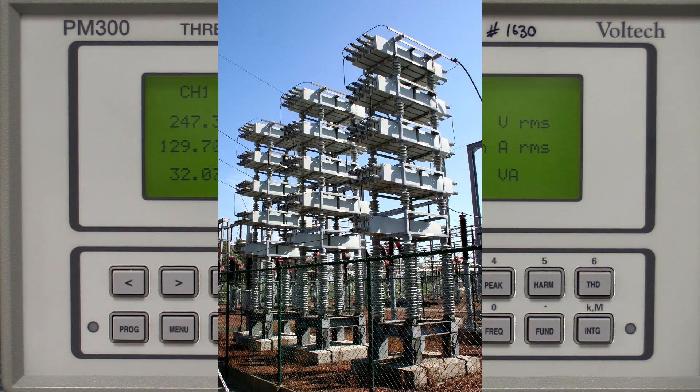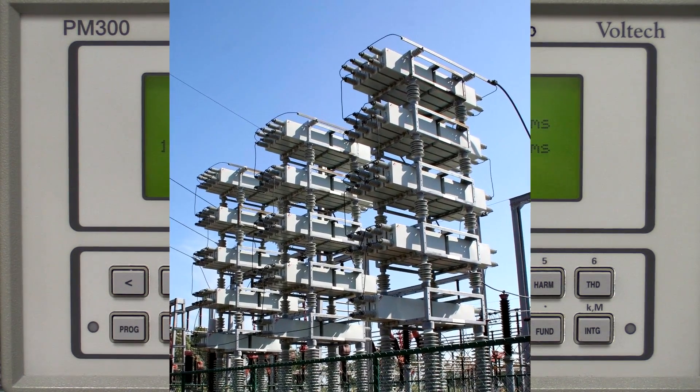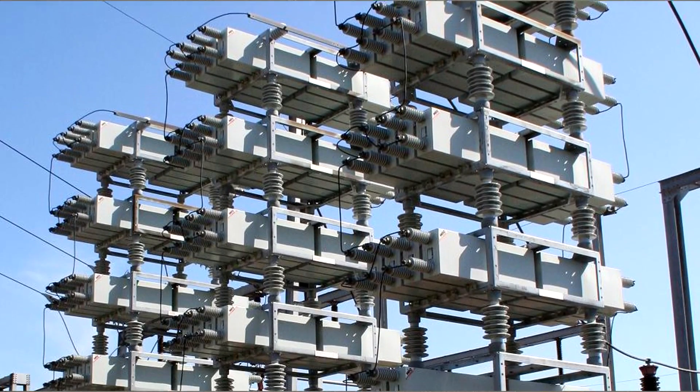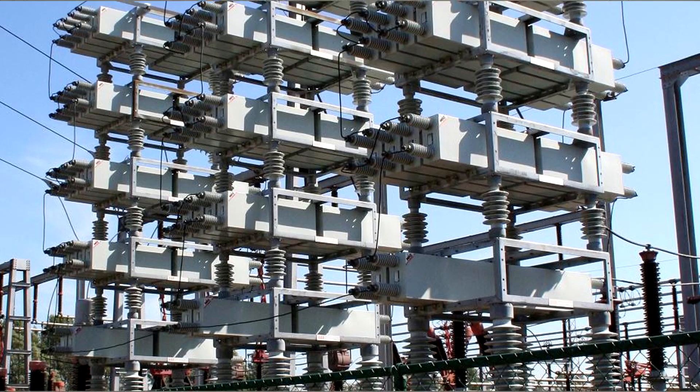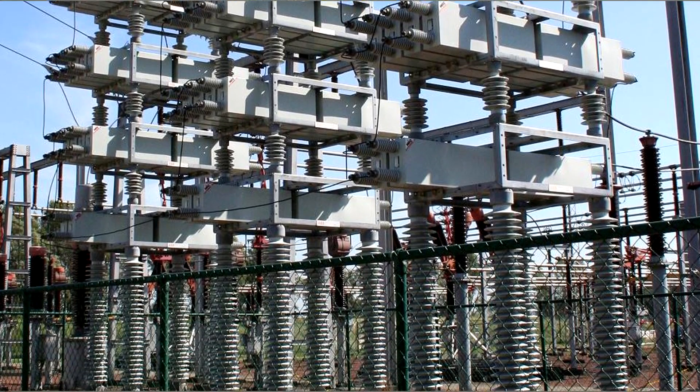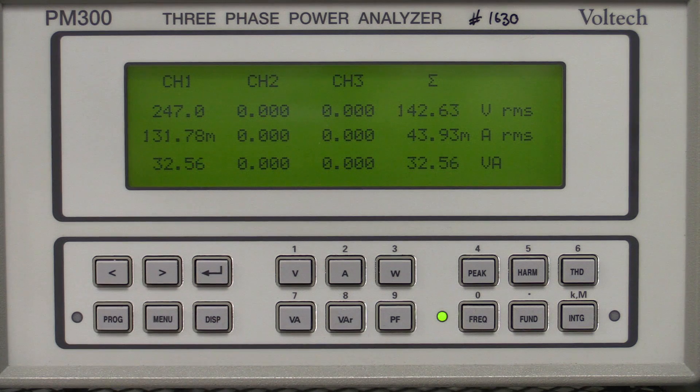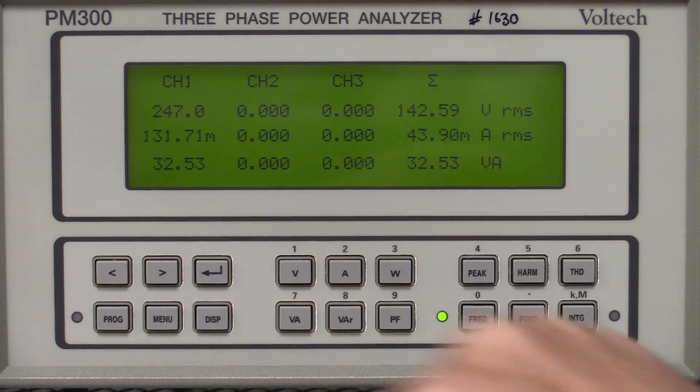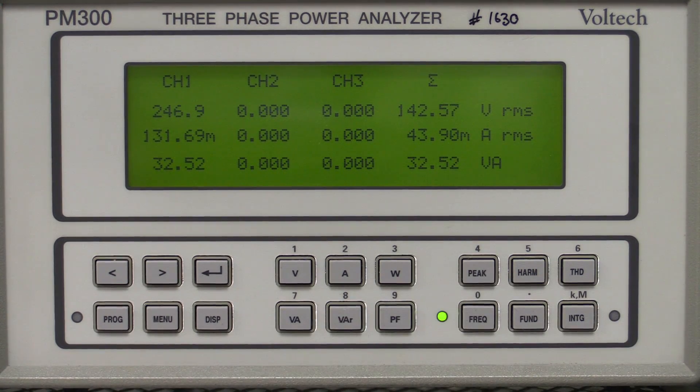Here's a photo of a particular power factor correction capacitor bank, or condenser bank, as they might be known in the industry to actually correct for these sorts of things. Because they don't want to be providing any more current than they have to. So, that's why a lot of industrial customers, they will be paying for VA. Your bill will be in volt amps.